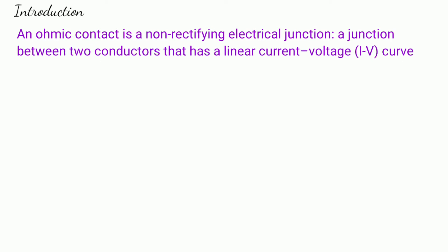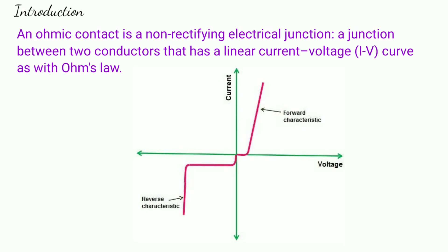An ohmic contact is a non-rectifying electrical junction, a junction between two conductors that has linear current voltage IV curve as with Ohm's law.